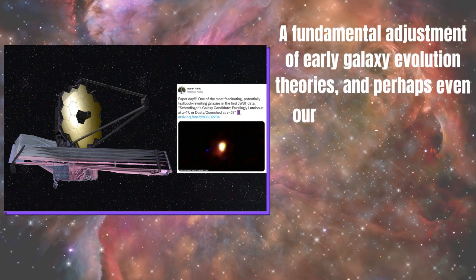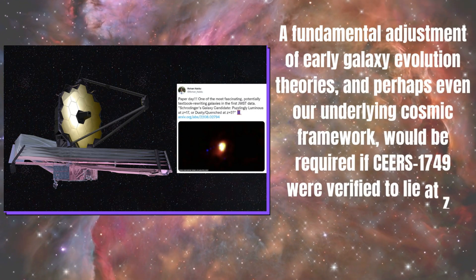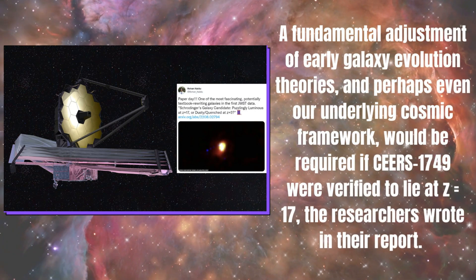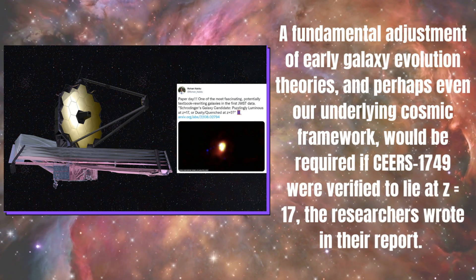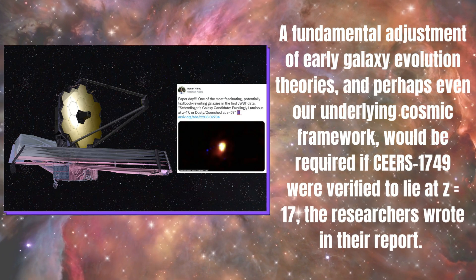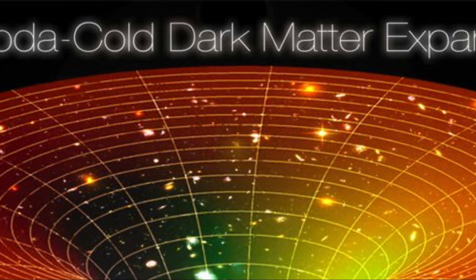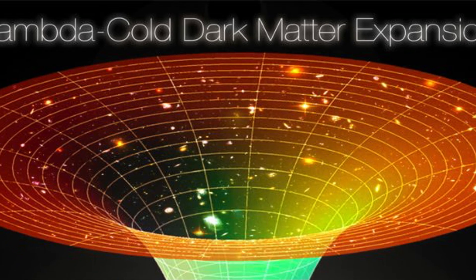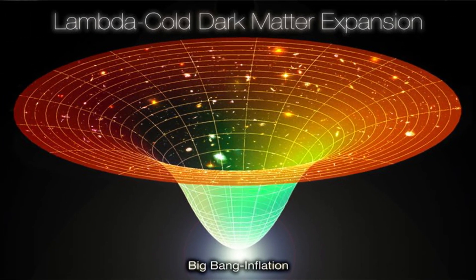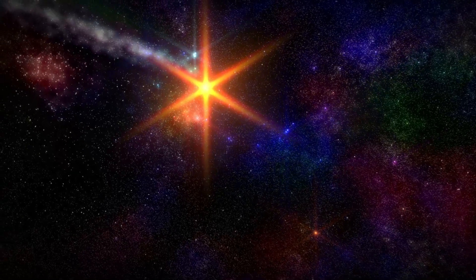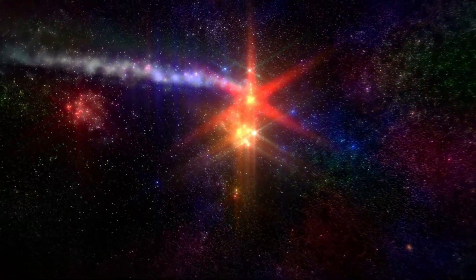The fundamental adjustment of early galaxy evolution theories, and perhaps even our underlying cosmic framework, would be required if CERS1749 were verified to lie at Z equals 17. The researchers wrote in their report, standard assumptions within the framework of Lambda CDM cosmology make it extremely difficult to generate such extraordinarily brilliant and massive galaxies only approximately 200 million years after the Big Bang.